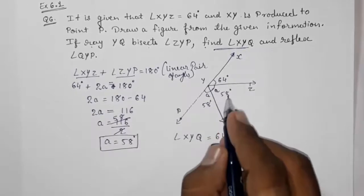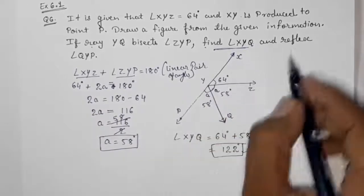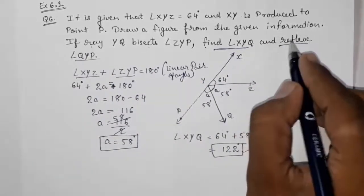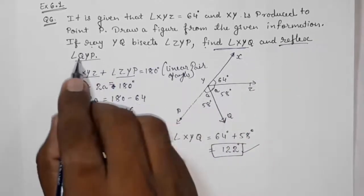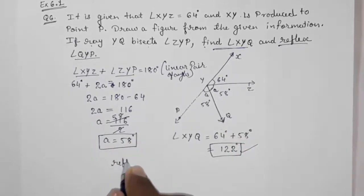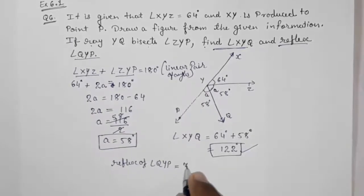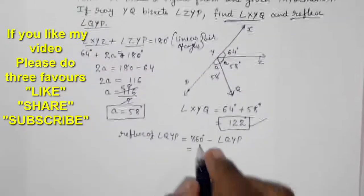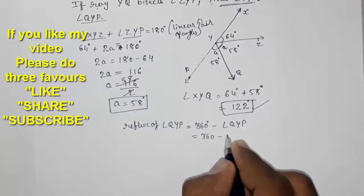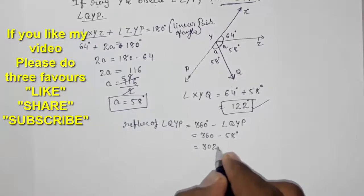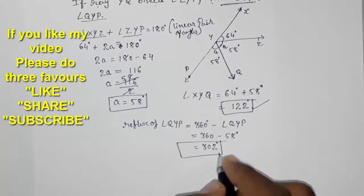This sum will be 122 degrees. Now they told us reflex of QYP. I told you in the beginning, whenever you want to find the reflex of any angle, first you need that angle. This QYP we are having, QYP is 58. So we can find reflex of angle QYP. So that will be 360 degrees minus 58, so 302 degrees. So this will be the reflex of angle QYP.